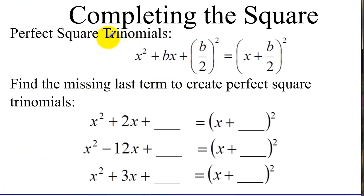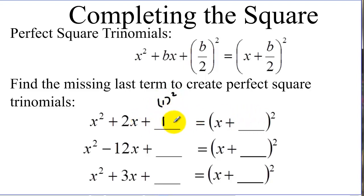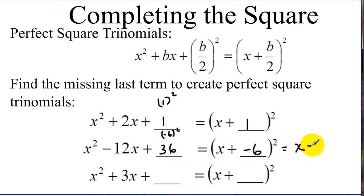We are not just looking for perfect square trinomials — we're going to be creating them. So if we look at this pattern, what number do I have to add to make this a perfect square trinomial? We take half of b, so half of 2 is 1, and square it — 1 squared is 1. That factors as x plus 1 squared. Here we take half of negative 12, which is negative 6, and square it, so we're adding 36, and it factors as x minus 6 squared. And lastly, half of 3 is 3 halves, squared gives us 9 fourths, and this factors as x plus 3 halves squared.